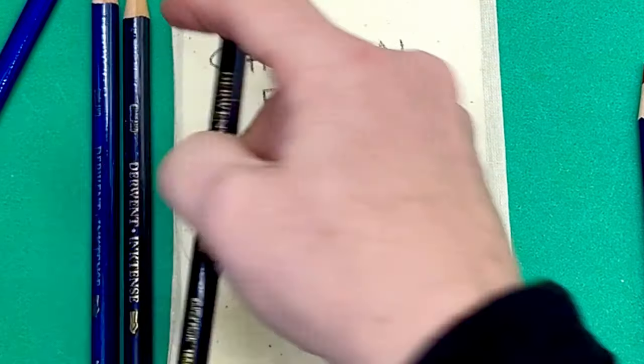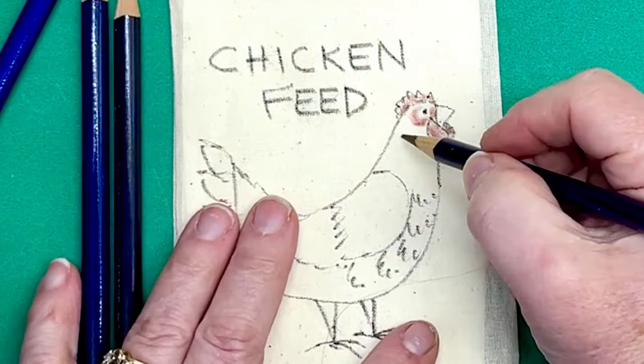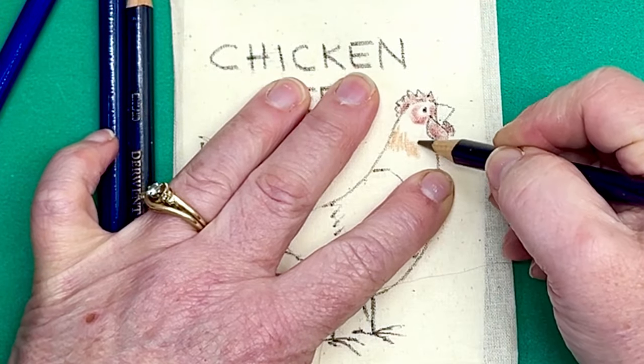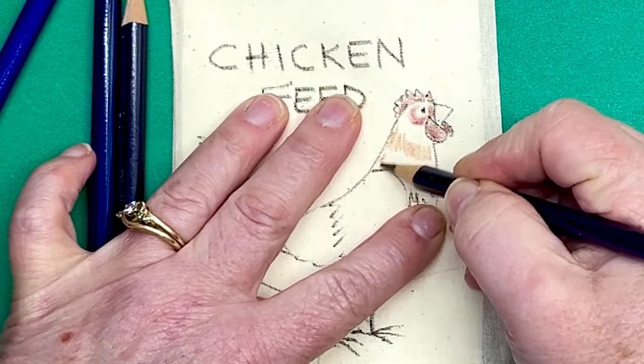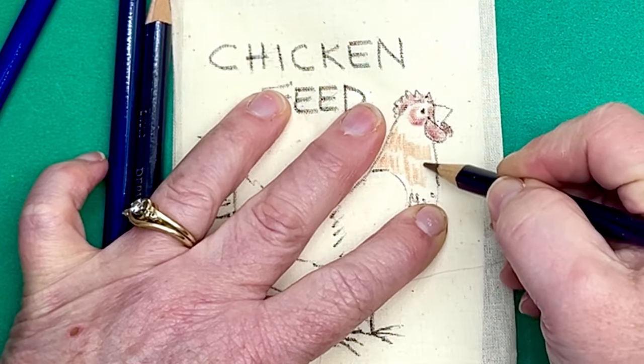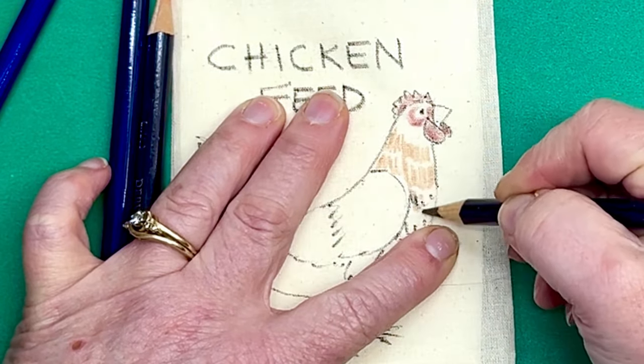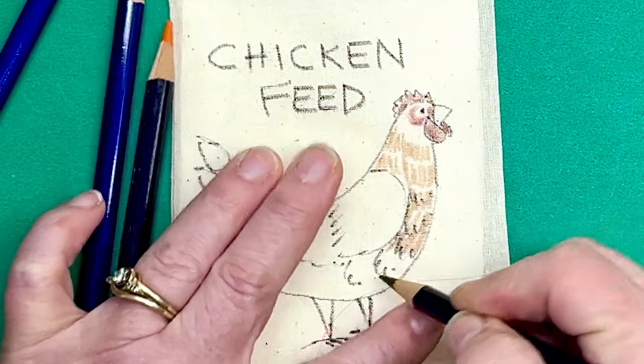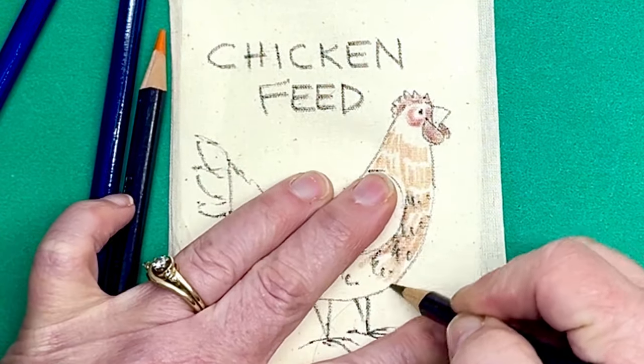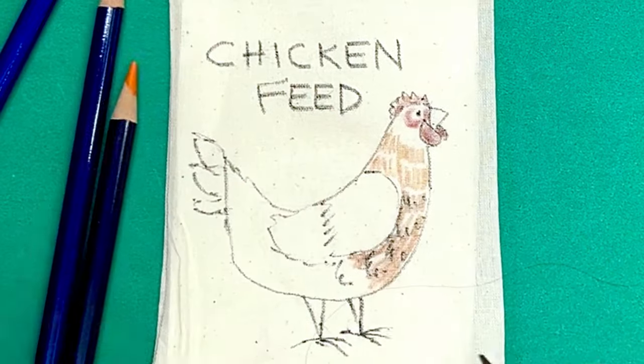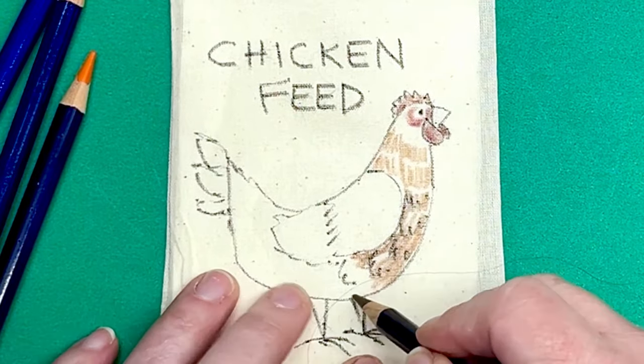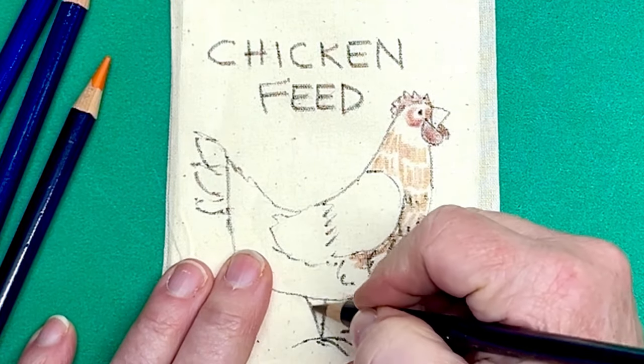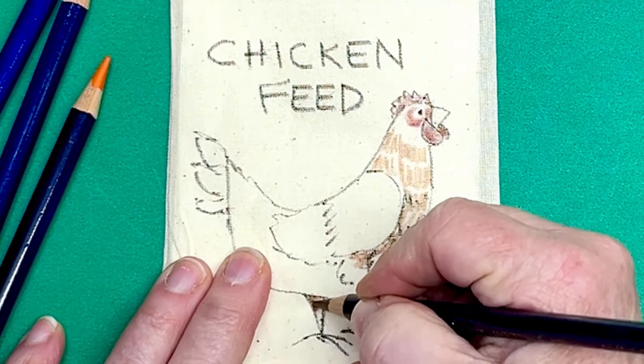Then I'm going to grab this brown and I'm going to just leave space. This is coming down the chest. Kind of like that. And I'm going to come down here on the legs a little bit.